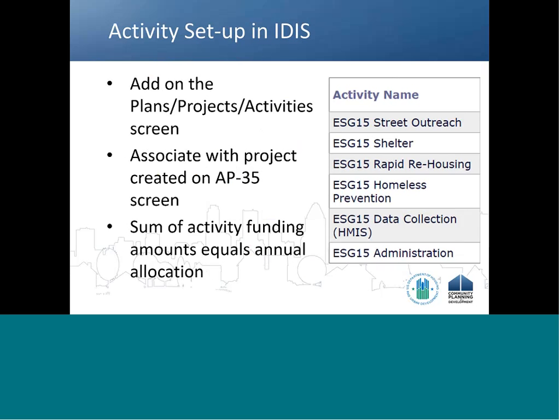Once the project is created on the AP35 screen, the recipient can then set up eligible ESG activities on the plan's project activity screen in IDIS. Recipients must associate the activities to the project created for the specific plan on the AP35 screen. Activities are not set up in the action plan, but separately in the project activity screens in IDIS. Recipients should adhere to the strict activity naming conventions shown on this slide. The sum of the funded amounts for activities set up under one federal fiscal year grant should equal the recipient's annual allocation. Please see the IDIS Manual for ESG for step-by-step instructions for activity setup.